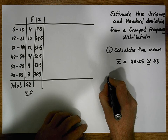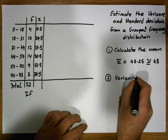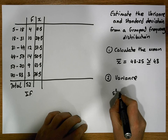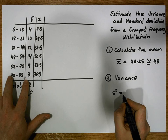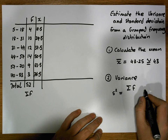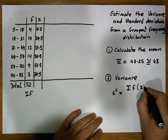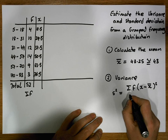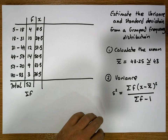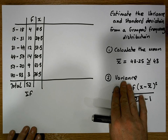To calculate the variance we have a formula. The symbol for the sample variance is s², and to calculate the variance from a grouped frequency distribution it's equal to the sum of f times each observation minus the sample mean squared, divided by the sum of the frequencies minus one.